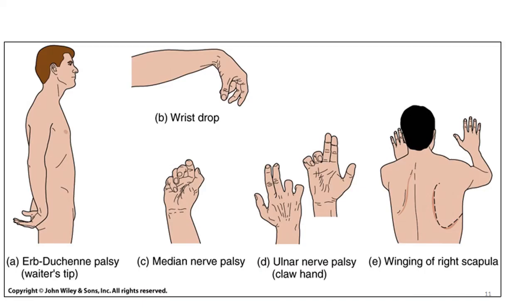In clinically assessing causes of anaesthesia or paresthesia — paresthesia being an abnormal sensation, typically a tingling or prickling — or assessing muscular weakness in the upper arm, knowledge of nerve branches can lead to identification of the affected nerve branch or root and the level at which it's affected, enabling us to clarify the cause of the pathology.